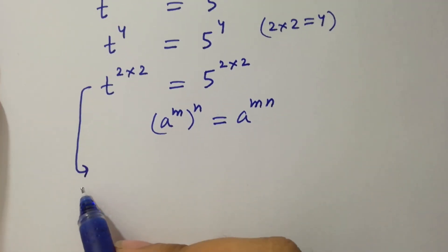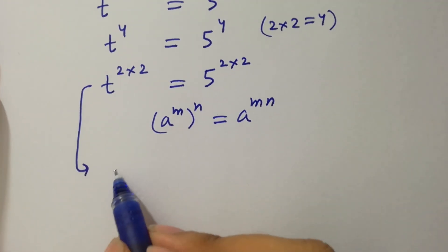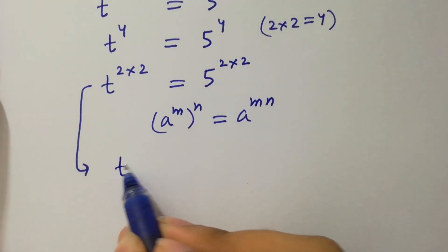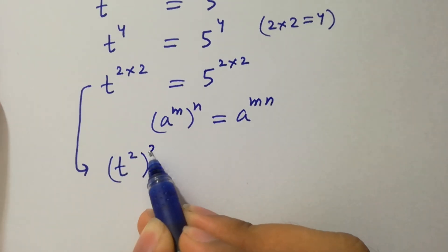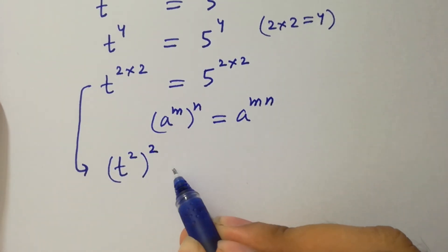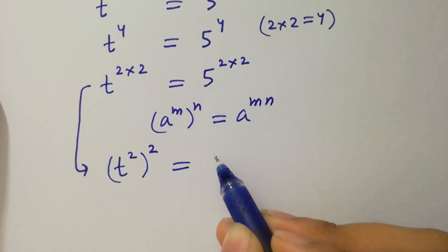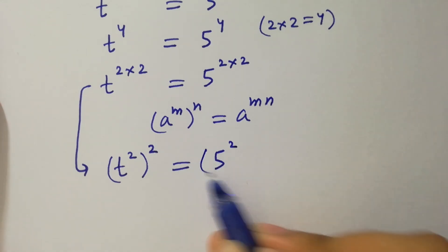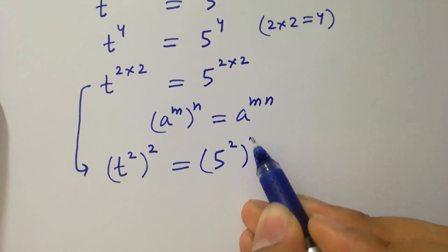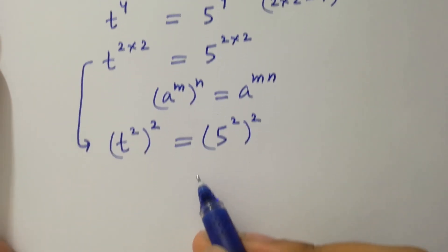Using the rule a to the power m, to the whole power n, equals a to the power m·n, then it will be t to the power 2, to the whole power 2, equal to 5 to the power 2, to the whole power 2.